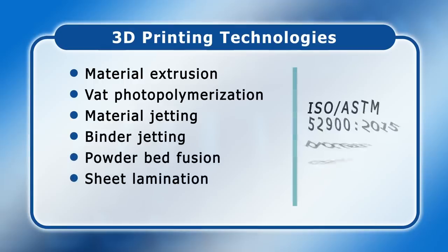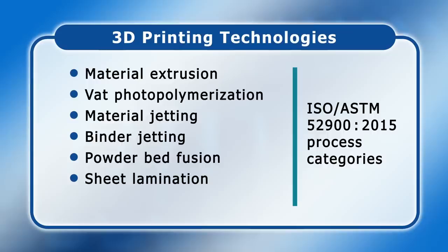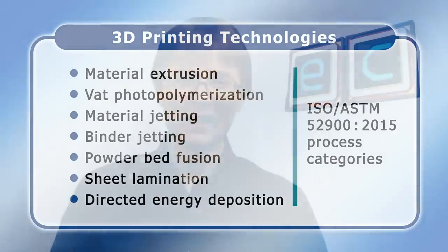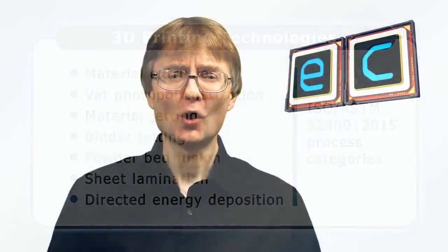In aggregate these are six of the seven process categories for additive manufacturing identified by the American Society for Testing and Materials in 2012, now encapsulated in the standard ISO ASTM 52900 2015. This actually lists seven 3D printing processes, the last of which is Directed Energy Deposition or DED. However DED is a very high-end industrial process I've never managed to capture on camera, but I have filmed all of the other 3D printing technologies, so let's go and take a closer look.